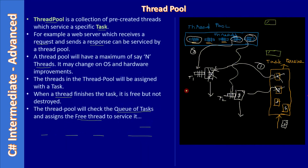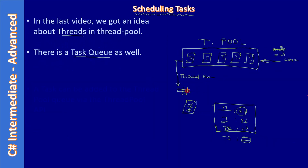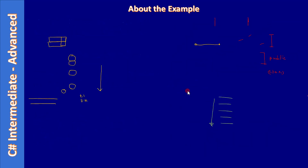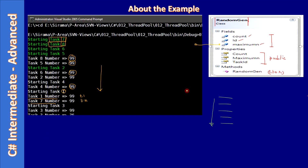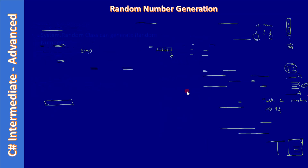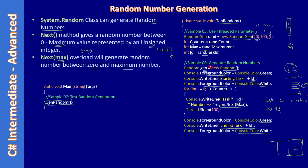In the first video we talked about what a thread pool and task queue is. In the next video we talked about scheduling the task, then we covered an example where we created the RandomGen class and saw how to generate random numbers. Now we will turn this RandomGen into a scheduled task, or make it a work item that can be added to the thread pool queue.